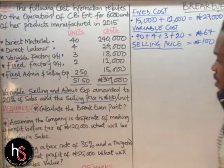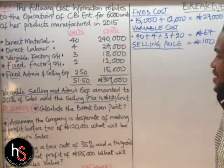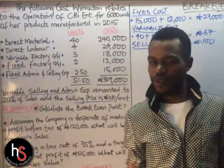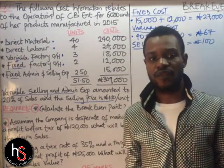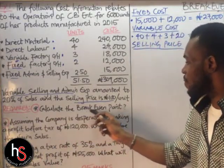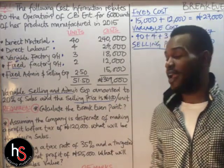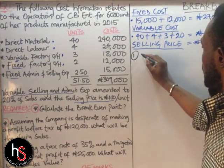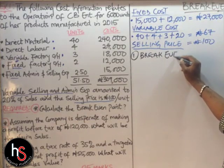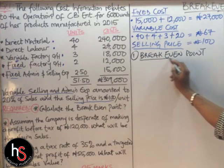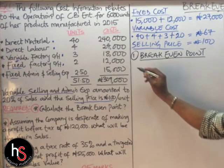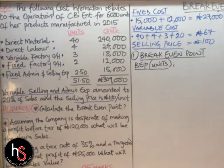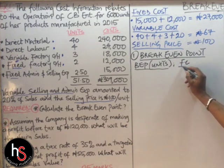The question asks us to calculate the breakeven point. Since it doesn't specify units or sales value, we solve for both. For the breakeven point in units, the formula is: Fixed Cost ÷ Contribution. Our fixed cost is $27,000. Contribution = Selling Price − Variable Cost = $100 − $67 = $33.